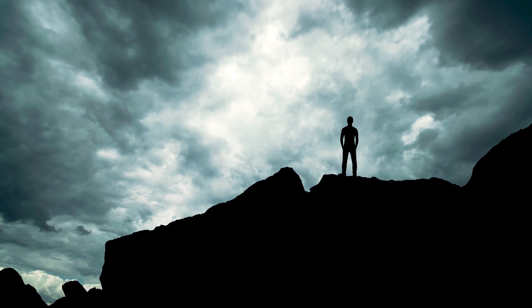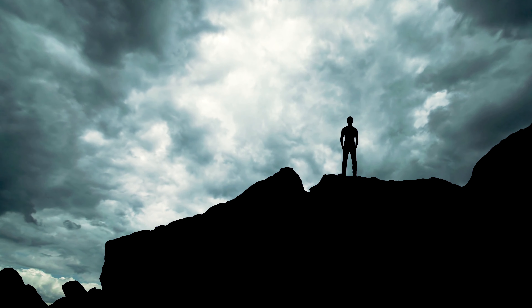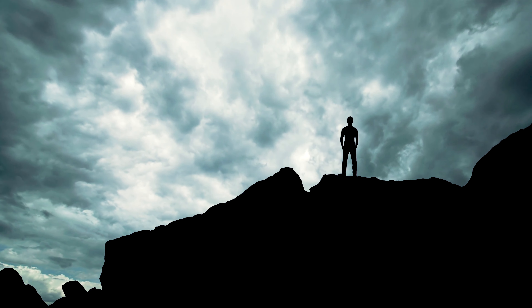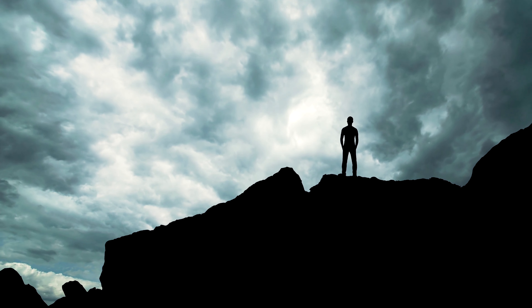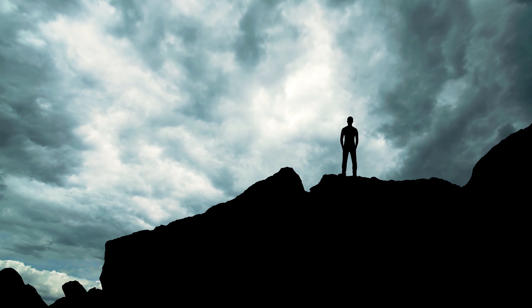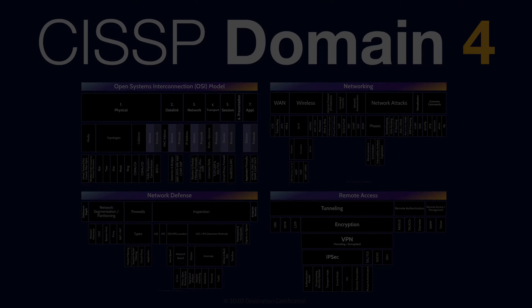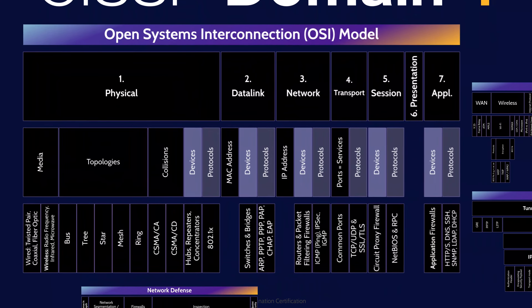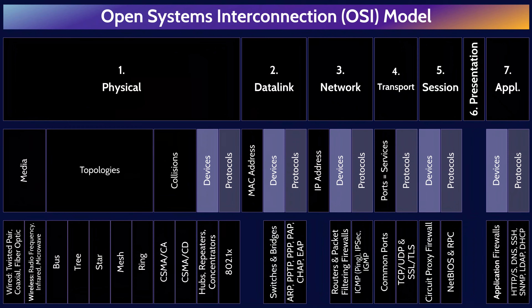Hey, I'm Rob Witcher and I'm here to help you pass the CISSP exam. We're going to go through a review of the major topics related to the OSI model in Domain 4 to understand how they interrelate and to guide your studies. This is the first of four videos for Domain 4. I've included links to the other mind map videos in the description below.